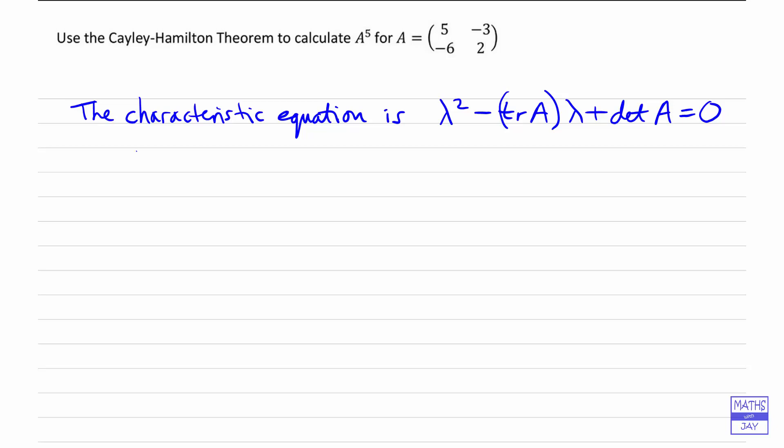So let's put in the numbers. The trace of A is the sum of the elements on the main diagonal, so that's 5 plus 2. And the determinant, that's going to be 5 times 2 minus negative 3 times negative 6, and that all equals 0.